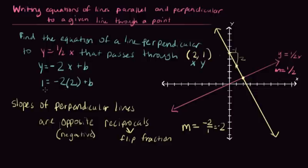So 1 equals negative 2 times 2 plus b. So this is 1 equals negative 4 plus b. Add 4 to both sides. So b equals 5. So our final answer would be y equals negative 2x plus 5.